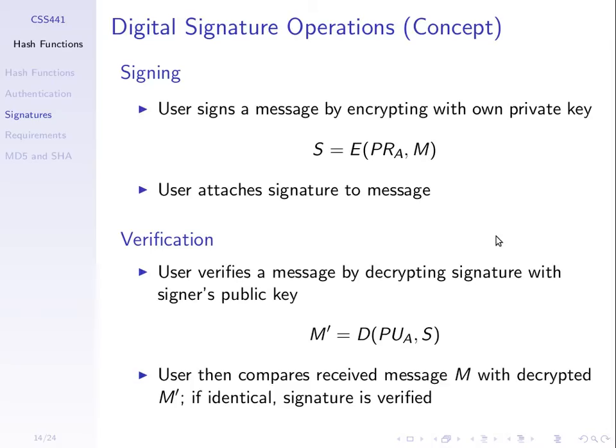The concept is quite simple and we've seen it when we introduced public key cryptography. A user signs a message by encrypting with their own private key. I have a message, I use my private key to encrypt, and the nature of public key cryptography is it can only be decrypted with my public key. So if it successfully decrypts with my public key, it means it was encrypted with my private key. Confirmation or verification of the signature is done by attaching the signature to the message, sending the message and the signature, and then the receiver uses the public key to verify.